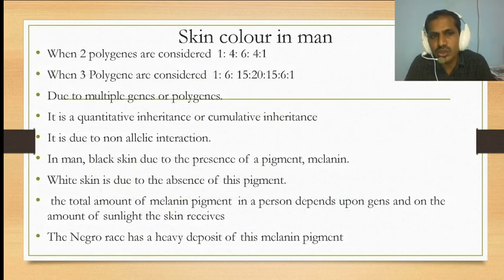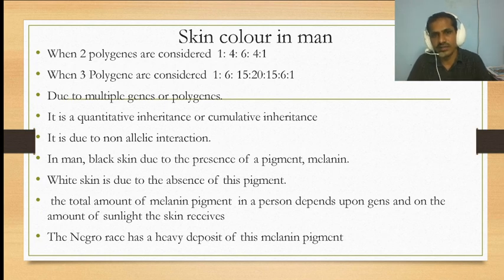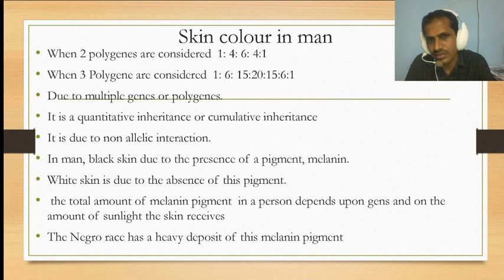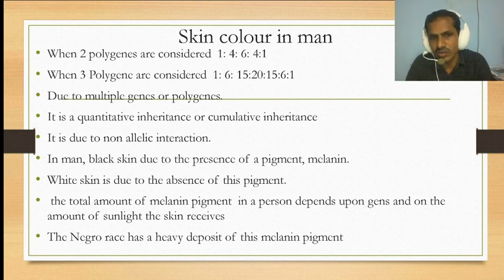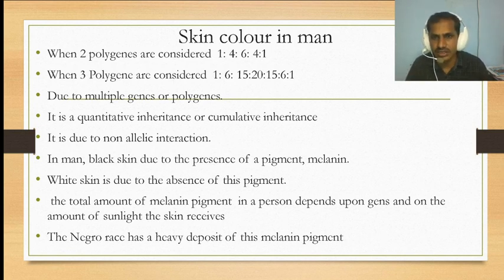When two polygenes are considered, the total is 16 combinations and the ratio is 1:4:6:4:1. When three polygenes are considered, the ratio is 1:6:15:20:15:6:1. This happens due to the presence of polygenes — it is a quantitative inheritance and a cumulative inheritance.